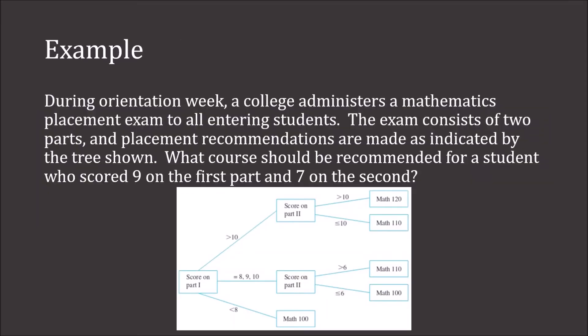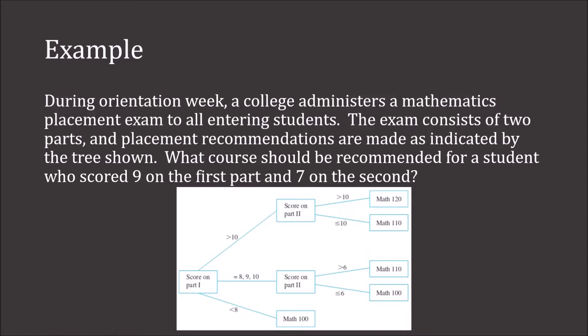During orientation week, a college administers a mathematics placement exam to all entering students. The exam consists of two parts, and placement recommendations are made as stated by the tree shown. What course should be recommended for a student who scored 9 on the first part and 7 on the second? We look at score on part 1 — the student scored a 9, which follows this branch. Then scored 7 on the second; 7 is greater than 6, so the student should be recommended for Math 110.